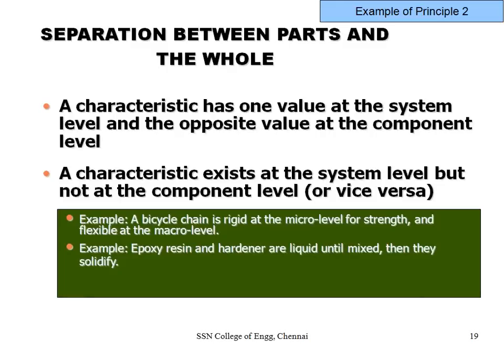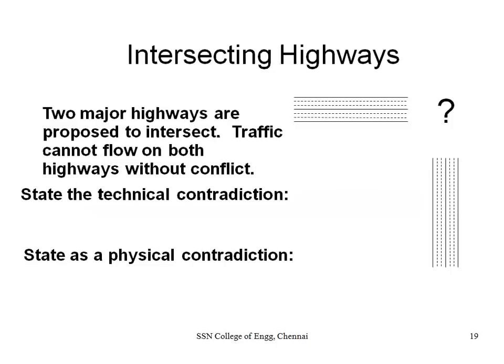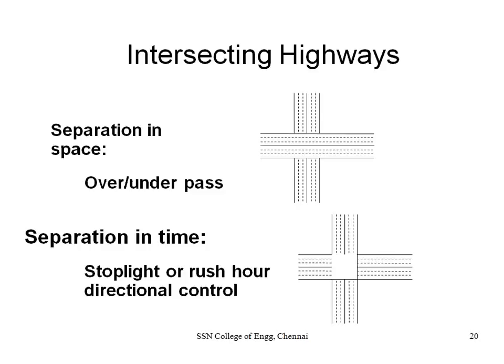Separation between parts and the whole: a bicycle chain is a good example. At every individual link it is very rigid, but when multiple links are combined, the chain is flexible. You achieve both a rigid and flexible contact — rigid at the subcomponent level, flexible at the overall component level. For highways, when two roads cross you can have separation in space: one road goes above the other.